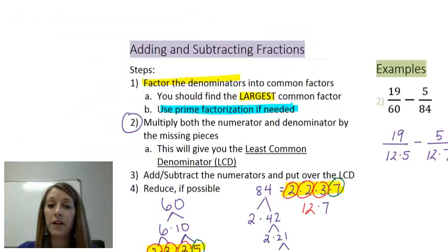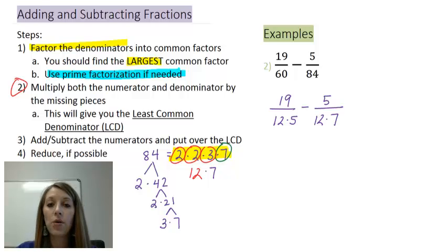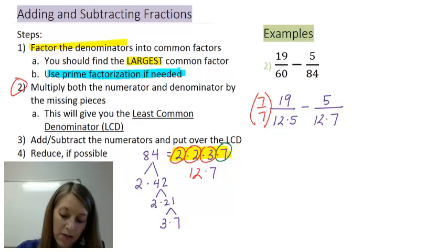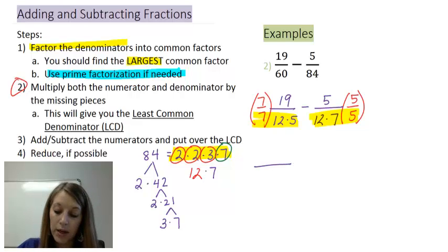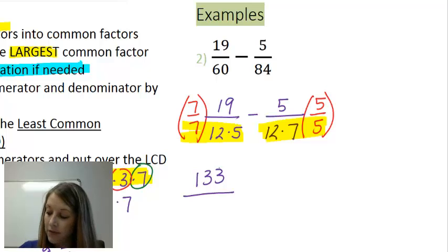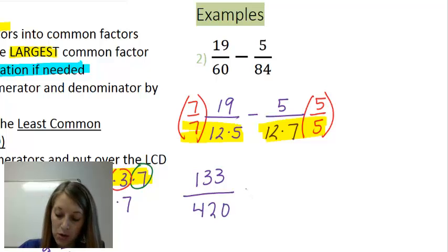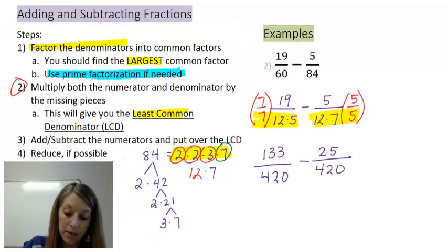At this point I multiply the fractions by their missing pieces. I multiply the left fraction by 7 over 7 and the right fraction by 5 over 5, so their denominators are identical. Multiplying out: 7 times 19 gives me 133, and 7 times 12 times 5 in the denominator gives me 420. On the right, 5 times 5 is 25, over 420. So my least common denominator is 420.